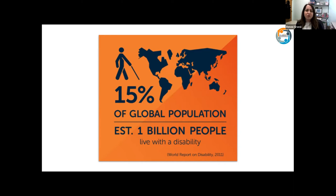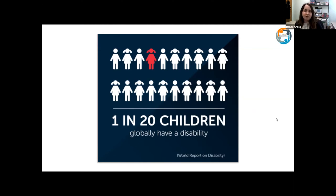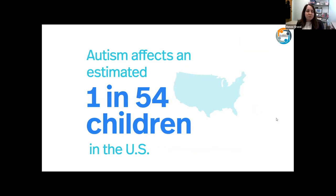Since we're talking about storytime, 1 in 20 children have a disability. What are the implications for our storytime audience? When we were in person before the pandemic, maybe our storytimes had roughly 10 to 20 children. Statistics show the likelihood is that at least one of those children had a disability. Getting more specific to the United States: autism affects 1 in 54 children, and that prevalence rate has been going up in recent years. Developmental disabilities are also more prevalent — 1 in 6 children have a developmental disability, meaning they are born with that disability.